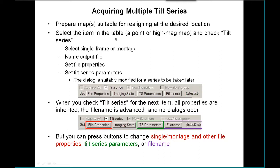The next step is to select an item in the table that you want to acquire the tilt series at — which could be a point or a high mag map (the latter is recommended) — and then check tilt series. When you check that, it brings up a series of dialogs: first a simple one to select whether it's a single frame or montage, then you pick the output file, then you enter your standard file properties menu for picking the data type and header properties, and then you enter the tilt series parameter dialog — the same old dialog you've seen for tilt series, but modified slightly to account for the fact that this is for a series to be taken later, so some options are not active.